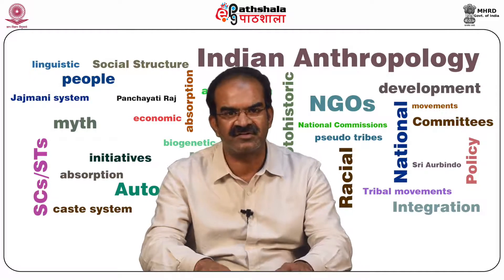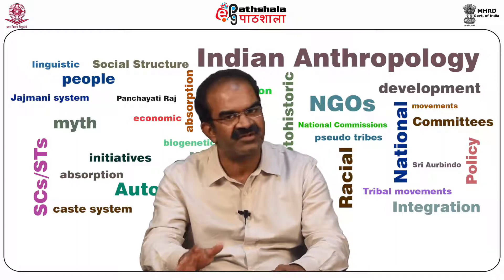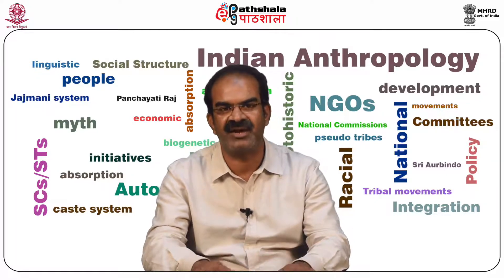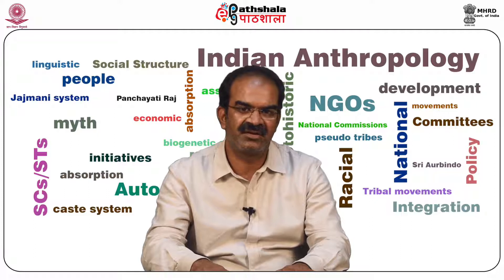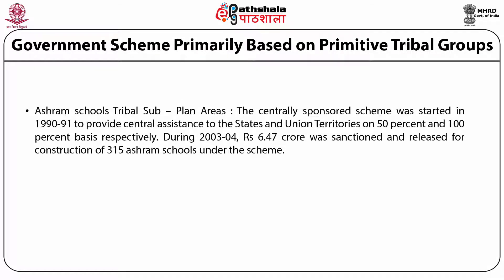There are boys' and girls' hostels for scheduled tribes as centrally sponsored schemes. Since tribal children are deprived of education due to the lack of facilities in their hamlets, the Girls' Hostels Scheme was started during the Third Five-Year Plan to provide residential facilities to tribal girls pursuing education away from home. Ashram schools in tribal sub-plan areas were centrally sponsored from 1991, providing central assistance to states and union territories on a 50% and 100% basis respectively. During 2003-2004, Rs. 6.4 crores were sanctioned for the construction of 315 additional ashram schools.